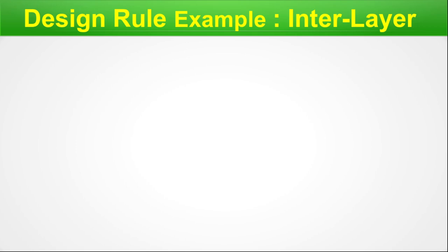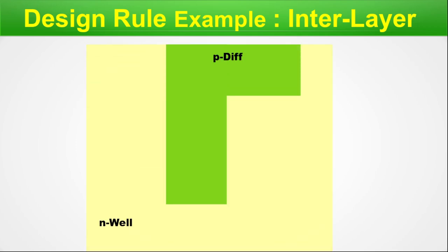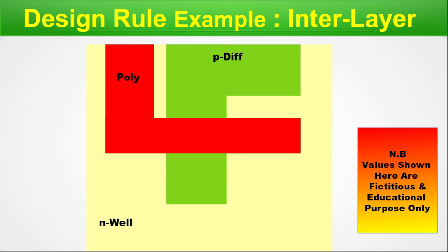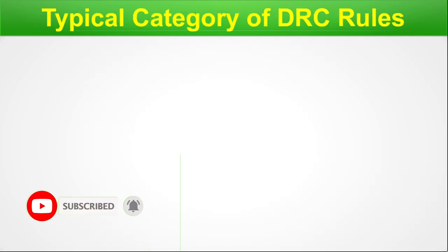Interlayer design rule examples: between poly and p-diffusion, the minimum spacing should be 2 units in one direction, 8 units in another, 4 units and 6 units for other orientations. Values are fictitious and for educational purposes only. If you cross-compare the design rule decks with the design rule manual, you will understand these rules in terms of actual layout as well as written text.